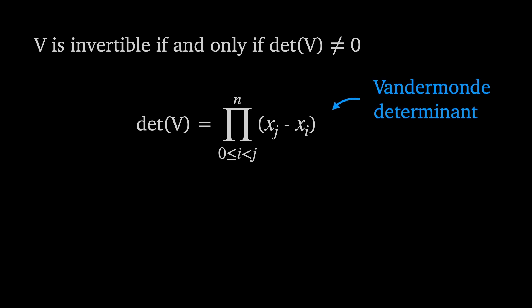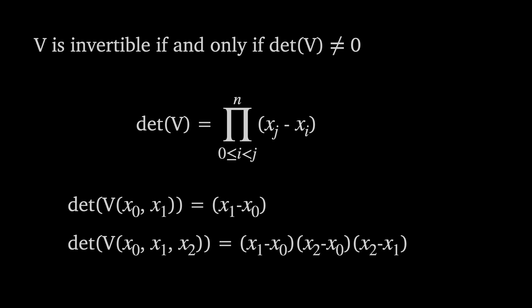In this form we call it the Vandermonde determinant. So for two nodes x sub 0 and x sub 1 the Vandermonde determinant is x sub 1 minus x sub 0. For three nodes the Vandermonde determinant is x sub 1 minus x sub 0 times x sub 2 minus x sub 0 times x sub 2 minus x sub 1.